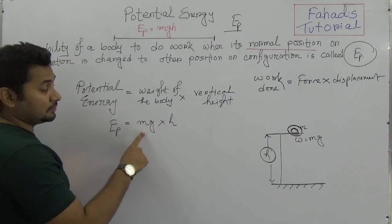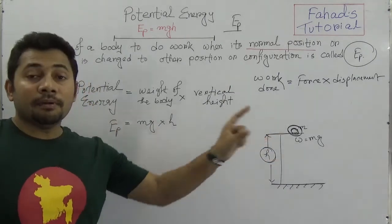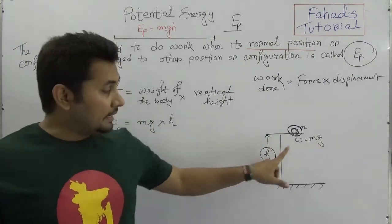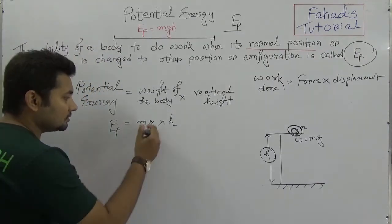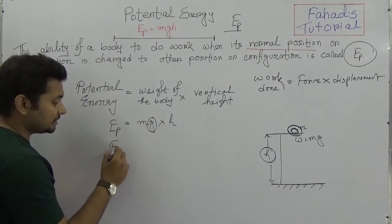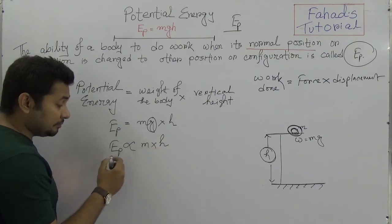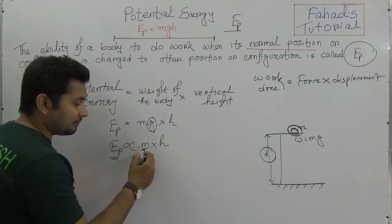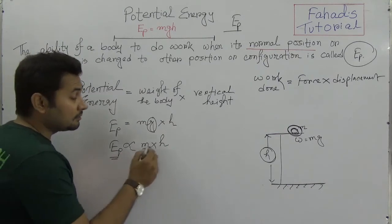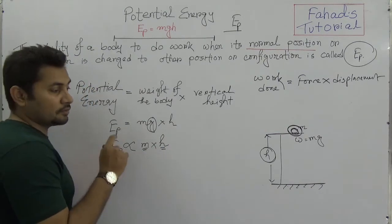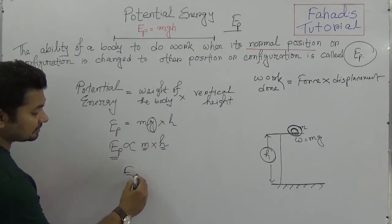So EP = mgh. If we look closely: mass, gravity, and height. If g is constant in a definite space, then potential energy depends on m times h. This means the potential energy will increase if mass increases — more mass, more potential energy — and more height gives more potential energy.